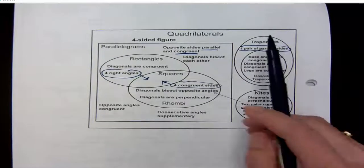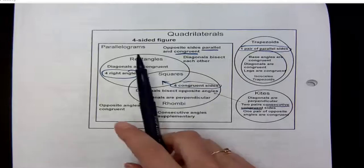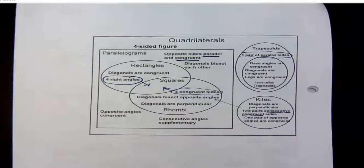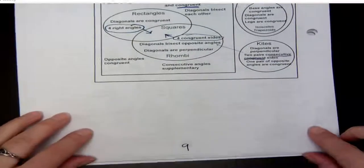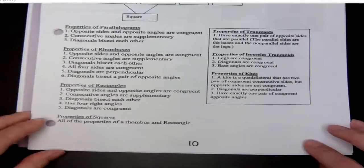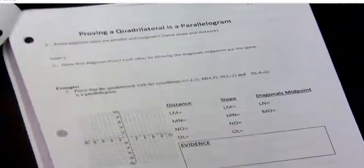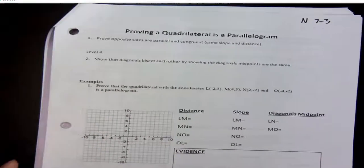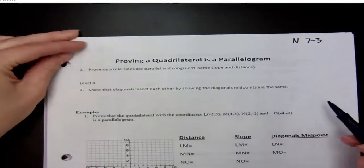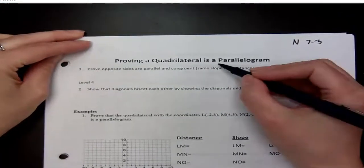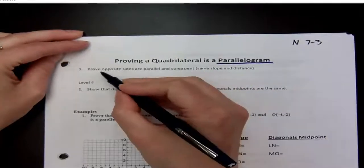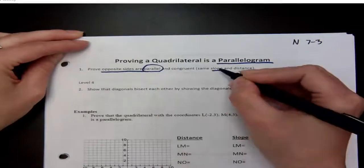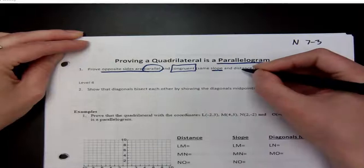Today is our second section of the quadrilateral proofs, where we're going to go through and write our proof statements for what the main properties of these quadrilaterals are. Remember, you have the reference pages on pages 9 and 10. The difference from last class is we're finding slope and distance to write our proof. For a parallelogram, opposite sides are parallel — which uses slope — and congruent, which uses distance.